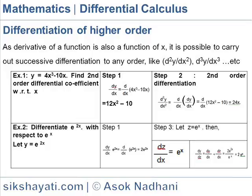In Step 2, we take the second order differentiation. So d²y/dx² is equal to d/dx of (dy/dx), which equals d/dx of (12x² minus 10), which is equal to 24x.